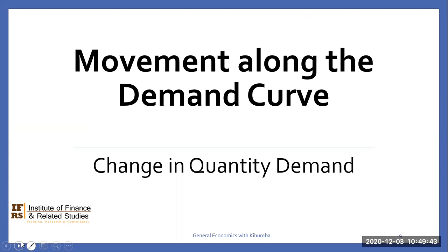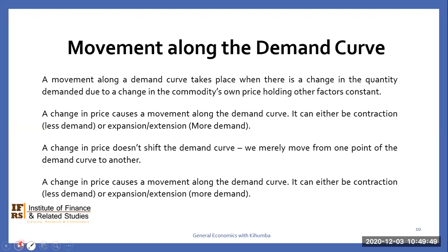Let's now look at movement along the demand curve, which is also known as change in quantity demanded. A movement along a demand curve takes place when there is a change in quantity demanded due to a change in the commodity's own price, holding other factors influencing demand constant. A change in price causes a movement along the demand curve, which can either be a contraction — meaning less demand — or an expansion — meaning more demand. A change in price does not shift the demand curve; rather, we merely move from one point to another on the same demand curve.